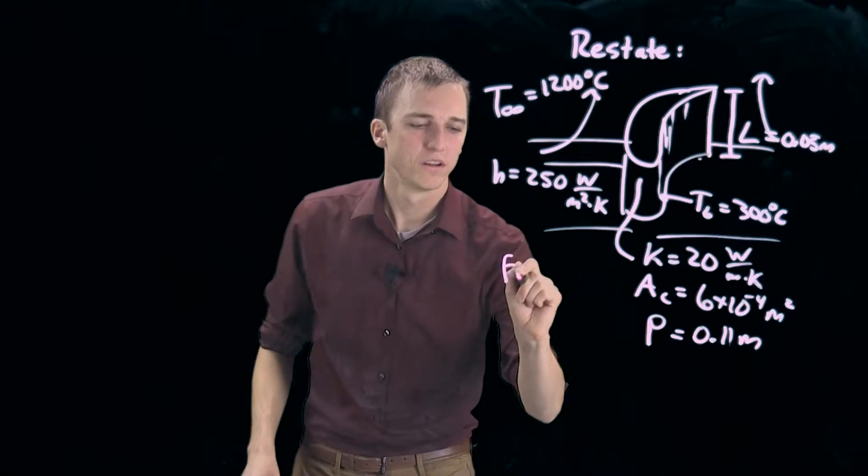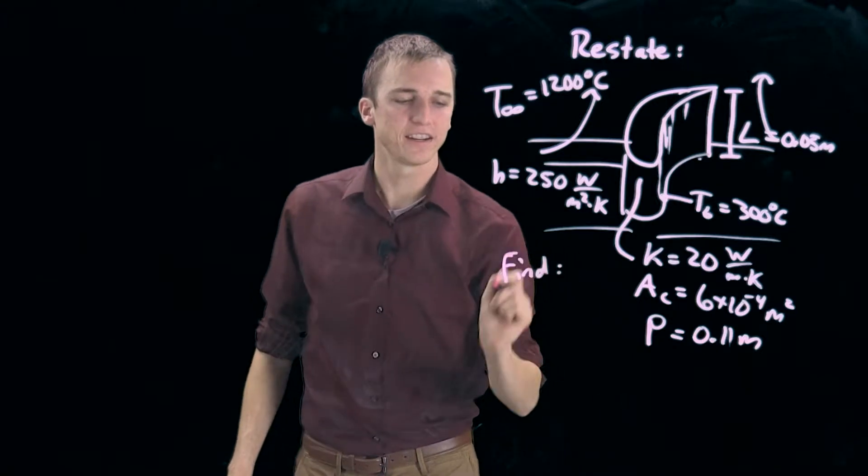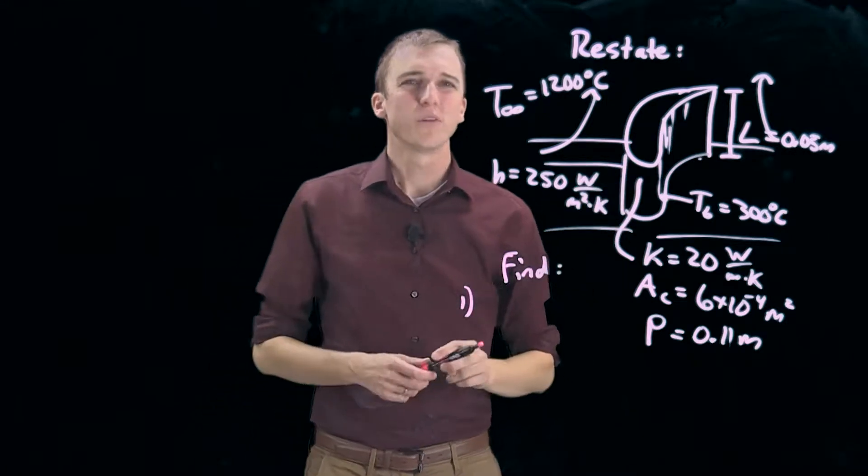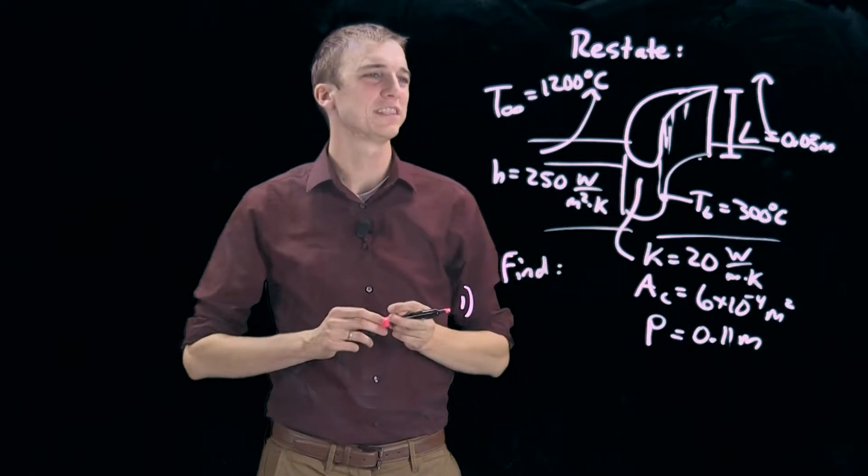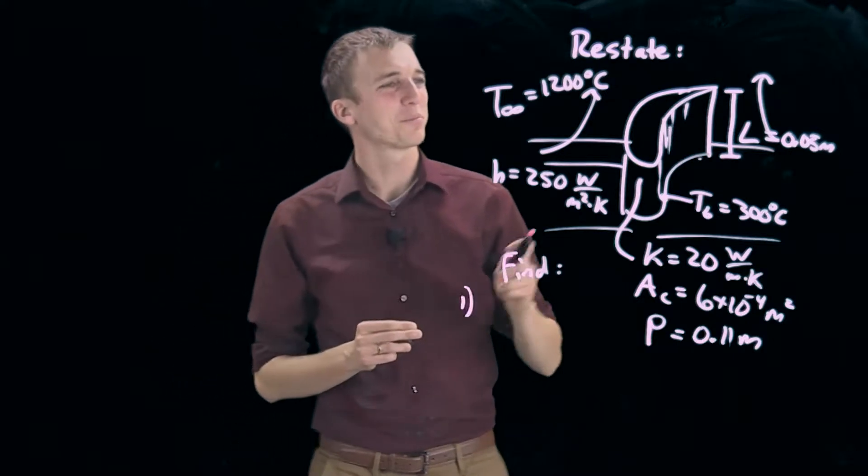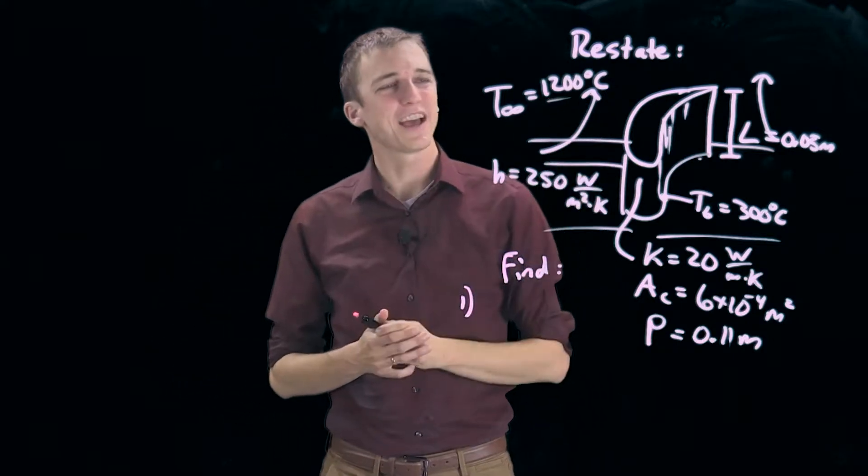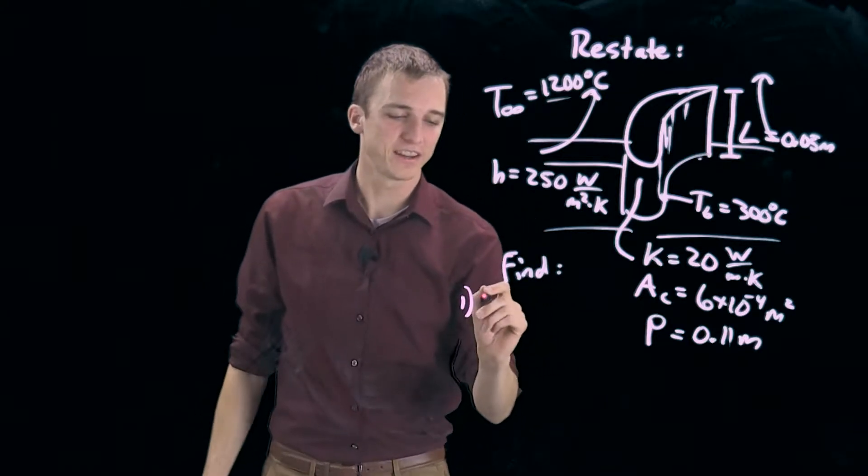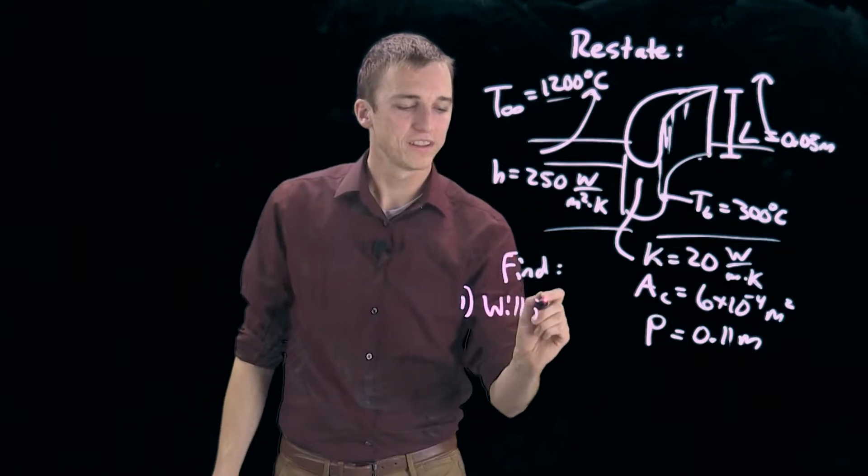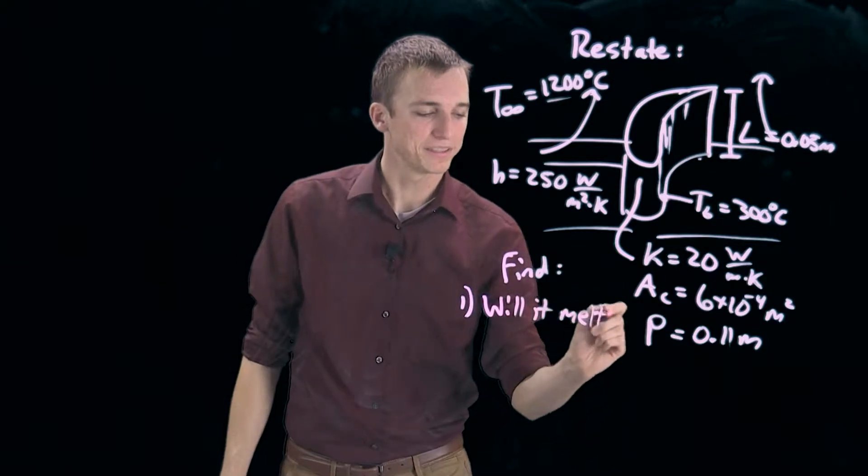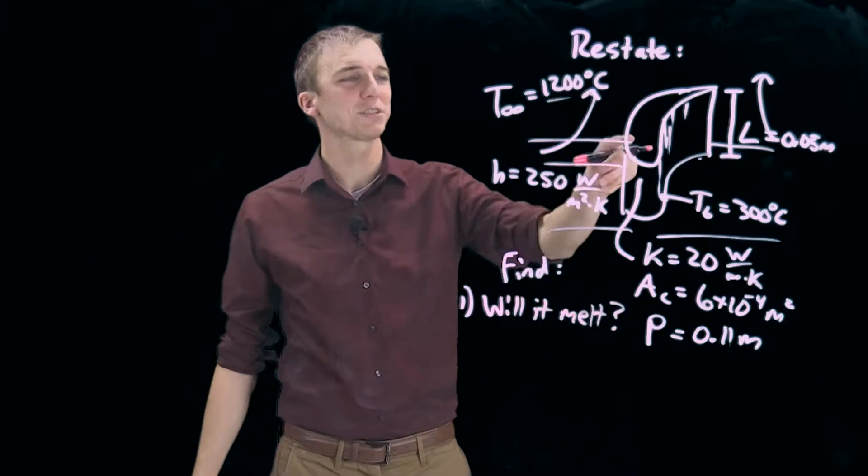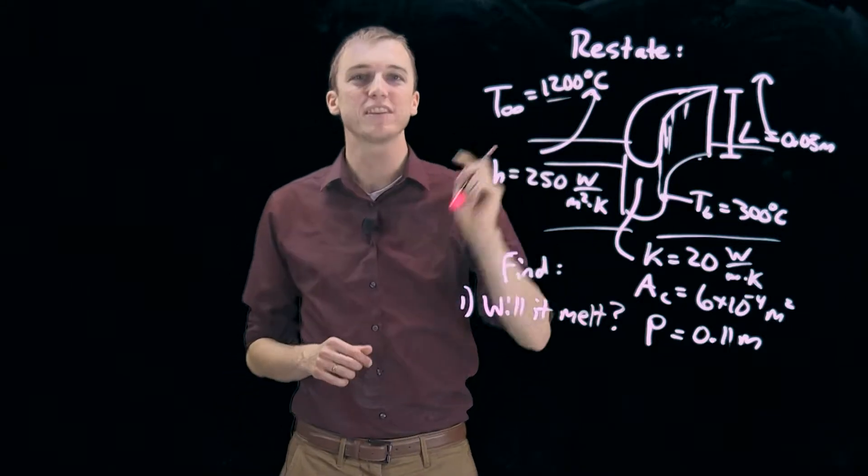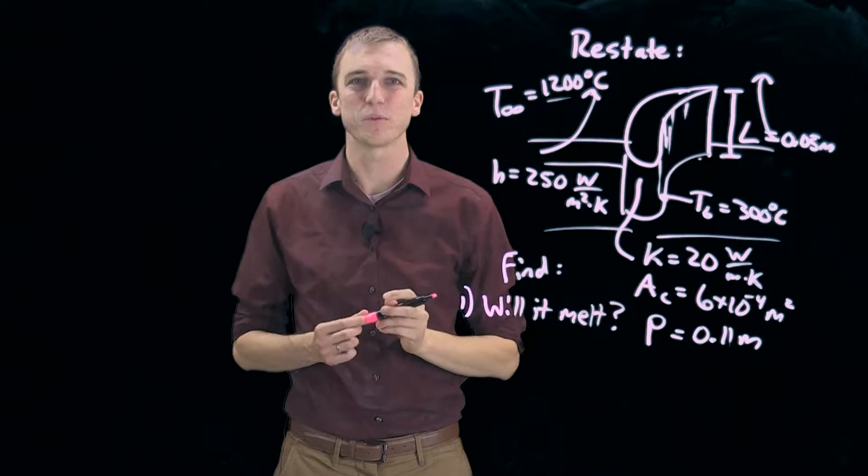In this problem we have been asked to find two things. First, this is made of nickel, which has a melting point of 1050 degrees Celsius. We have a problem in that our combustion gases are hotter than the melting point of the nickel. So we've been asked to find, will it melt? In other words, is the maximum temperature in this fin going to exceed a value of 1050 degrees Celsius?